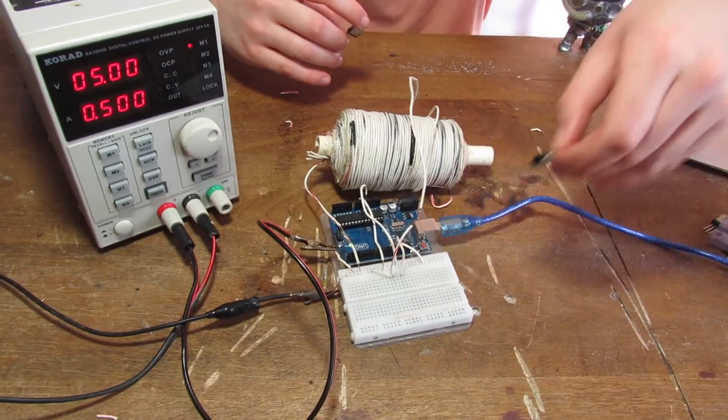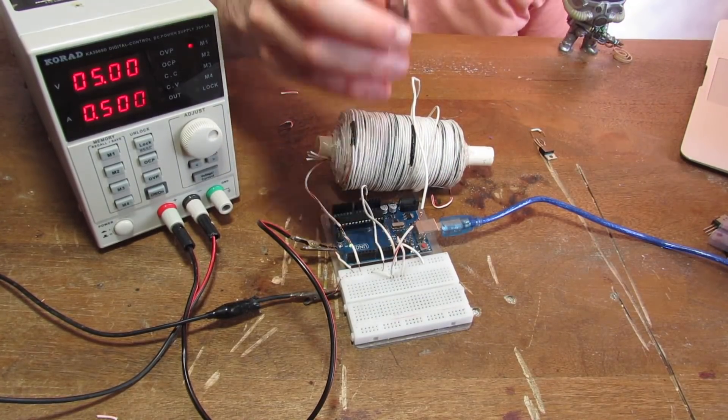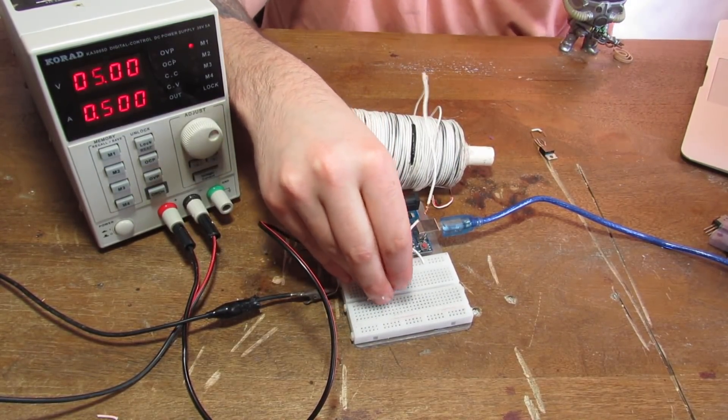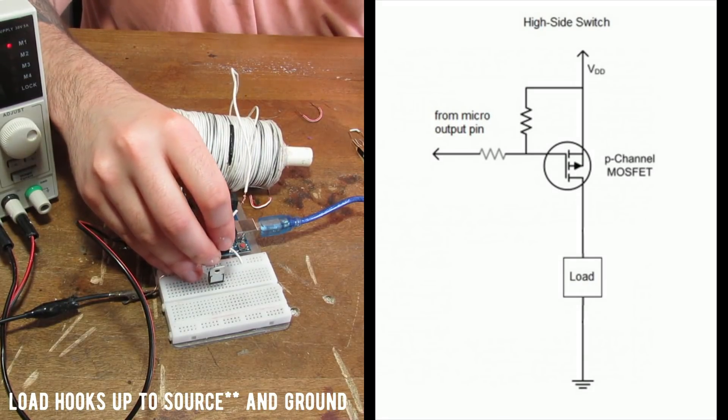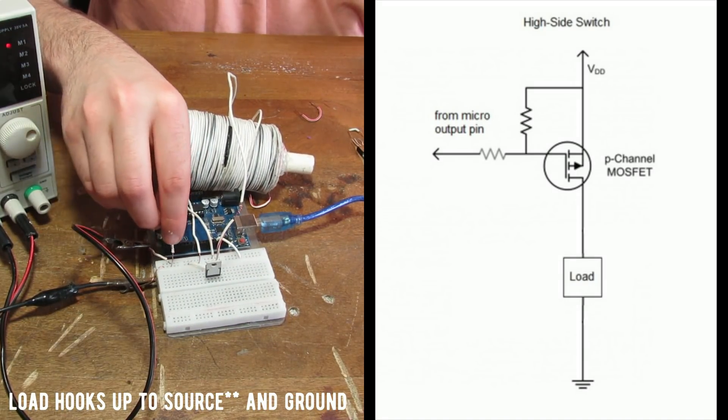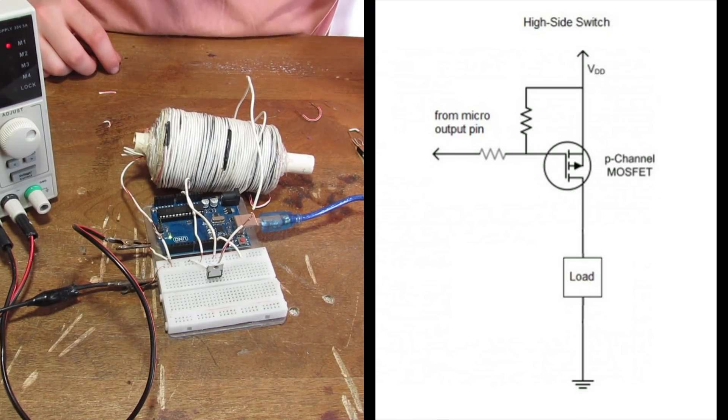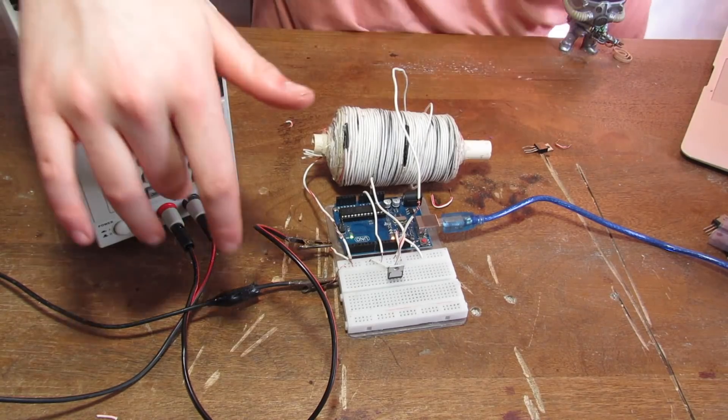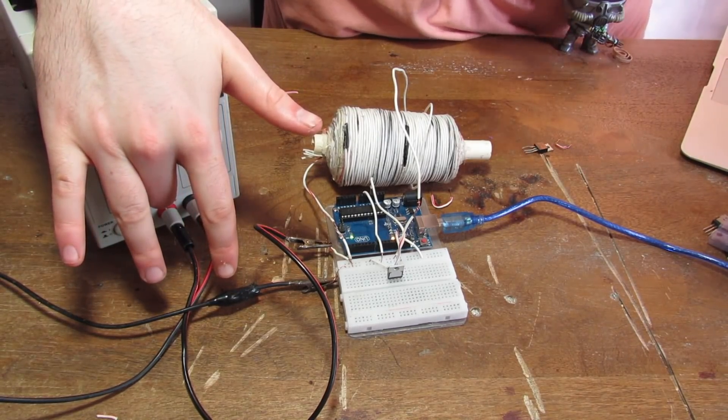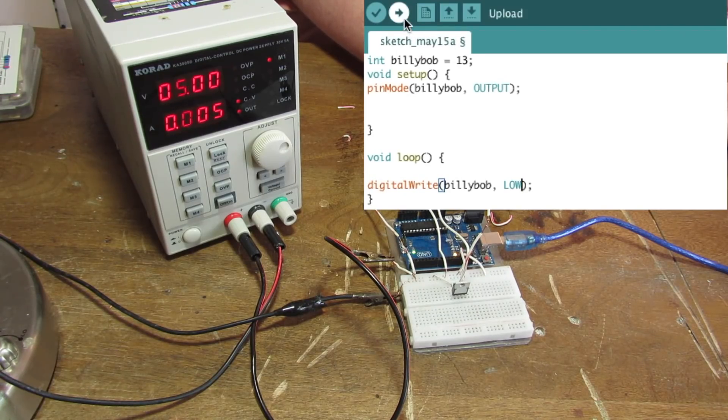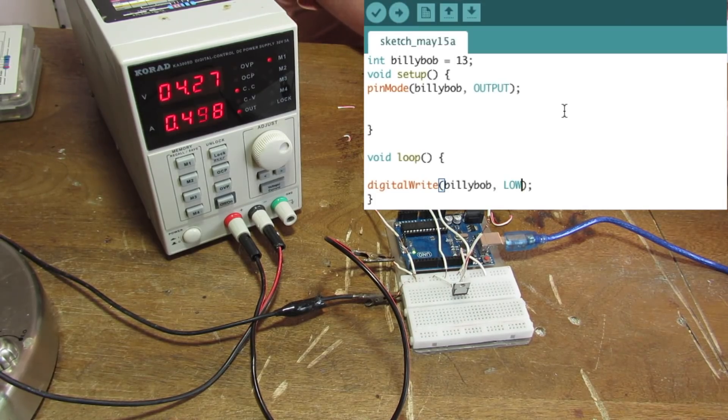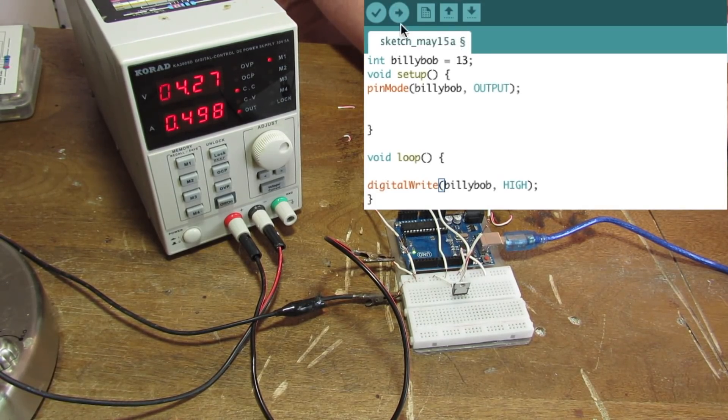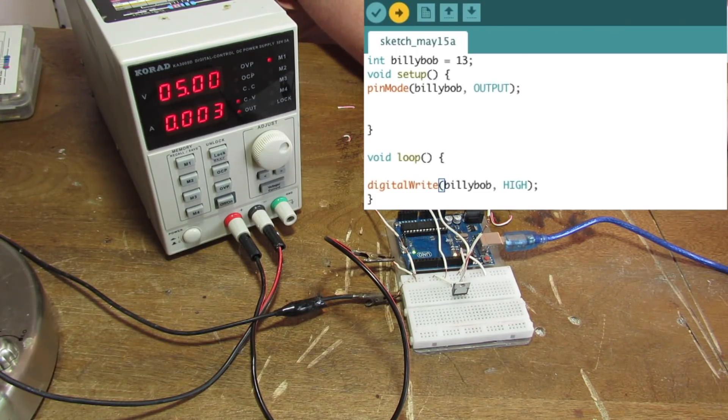All right. Now, for the P-channel MOSFET. This one, I will be controlling the high side of the circuit with. C still gets the load, except the other end of the coil now goes to negative. Source is now positive. The gate will be pin 13. So, I'm going to turn the power source on. Same voltage and current. Okay. Now, when I give it a low command, it turns on. And when I give it a high command, it turns off. And that is the P-channel MOSFET.